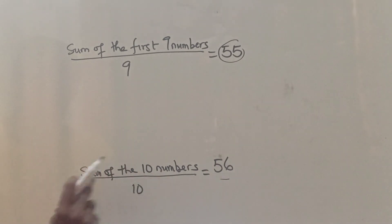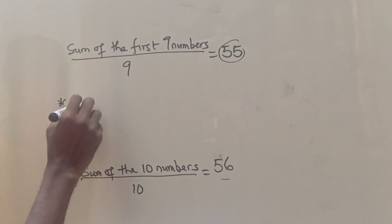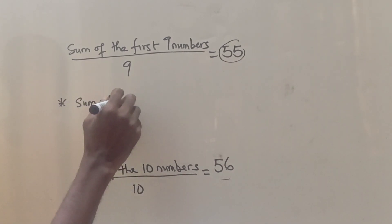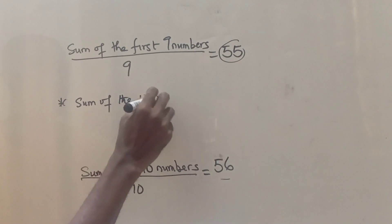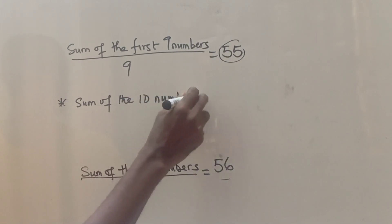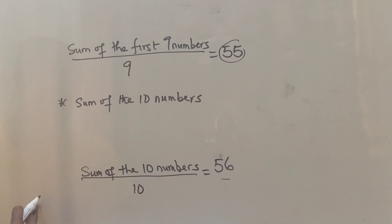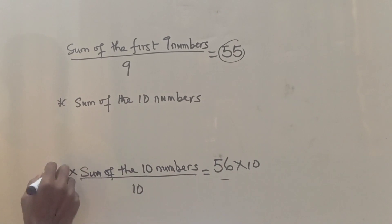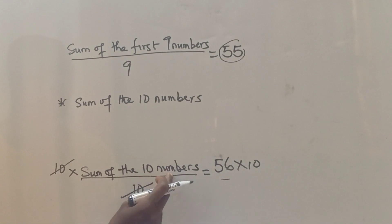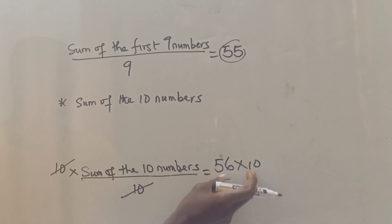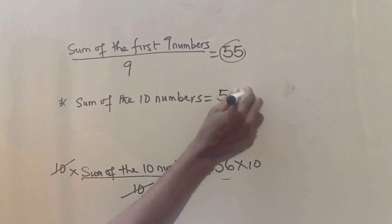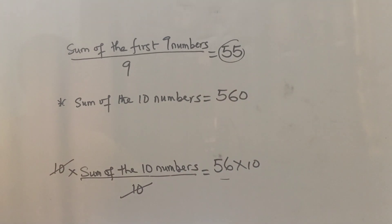So now, what is the sum of the 10 numbers? The sum of the 10 numbers is... I'm going to multiply this by 10. So this goes out, and we are left with sum of 10 numbers, which is 560.